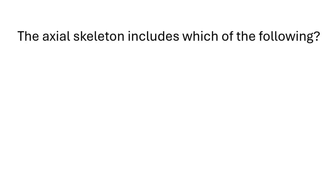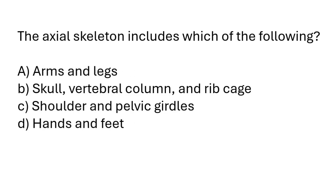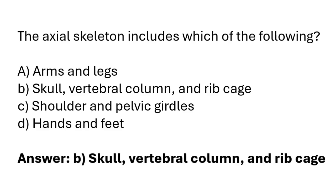The axial skeleton includes which of the following? Arms and legs, skull, vertebral column and ribcage, shoulder and pelvic girdles, hands and feet. The correct answer is option B: the axial skeleton includes the skull, vertebral column, and ribcage.